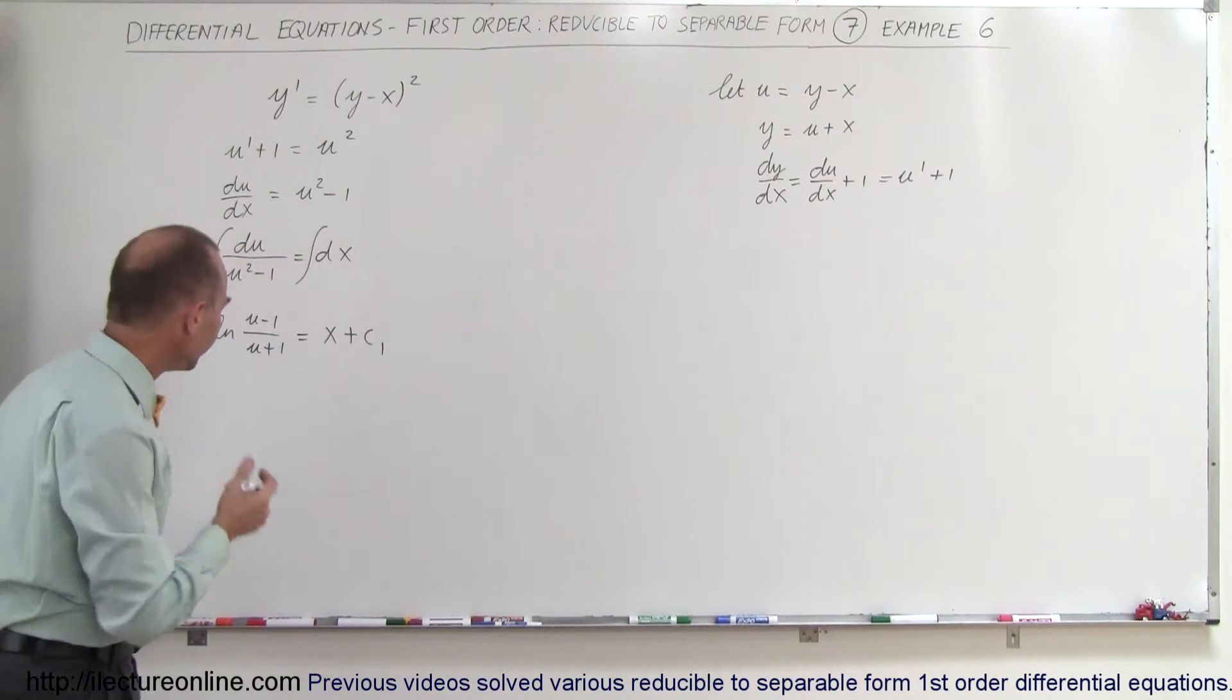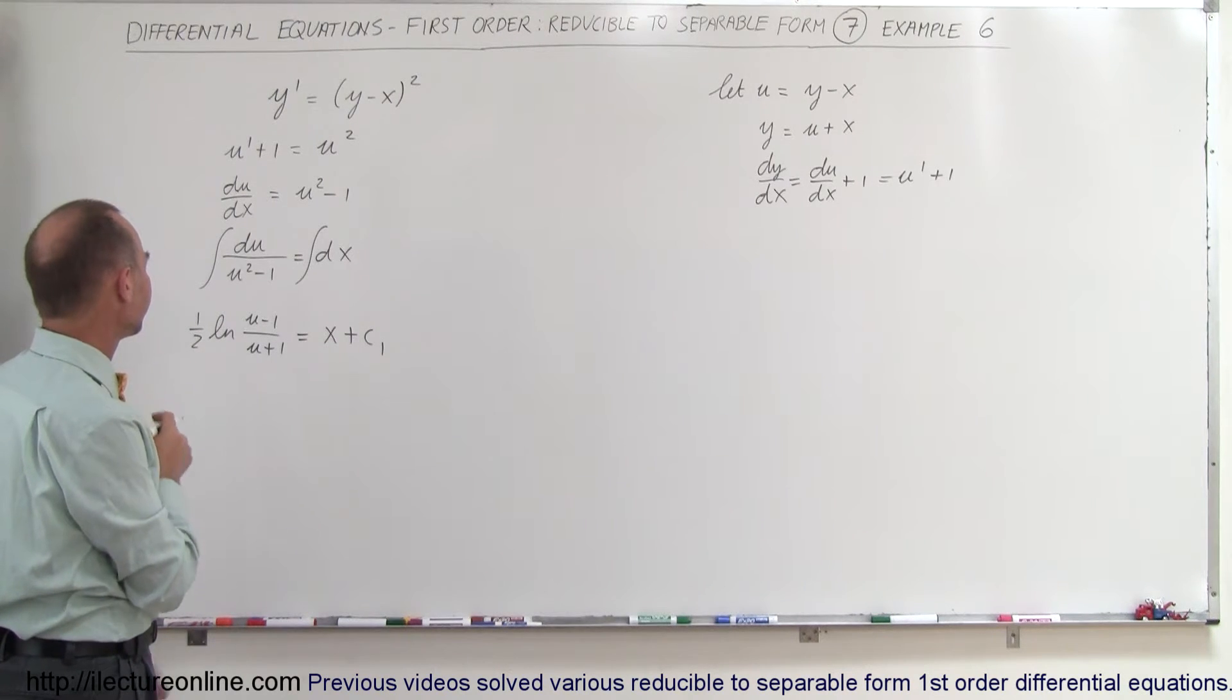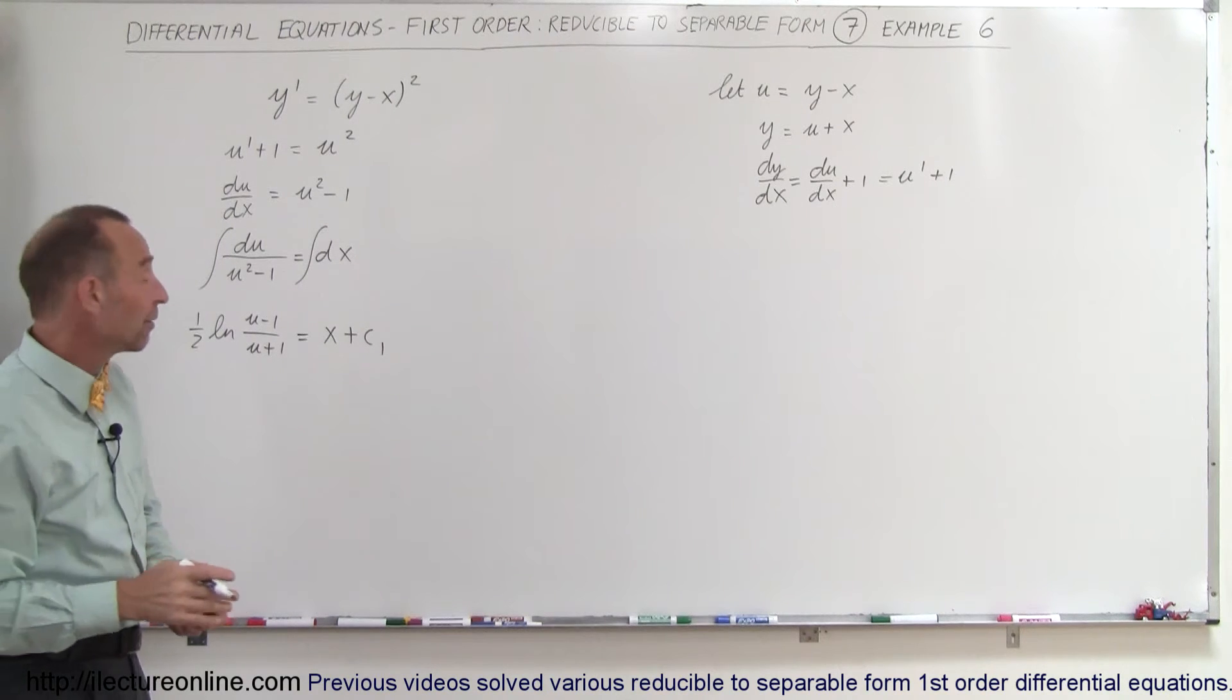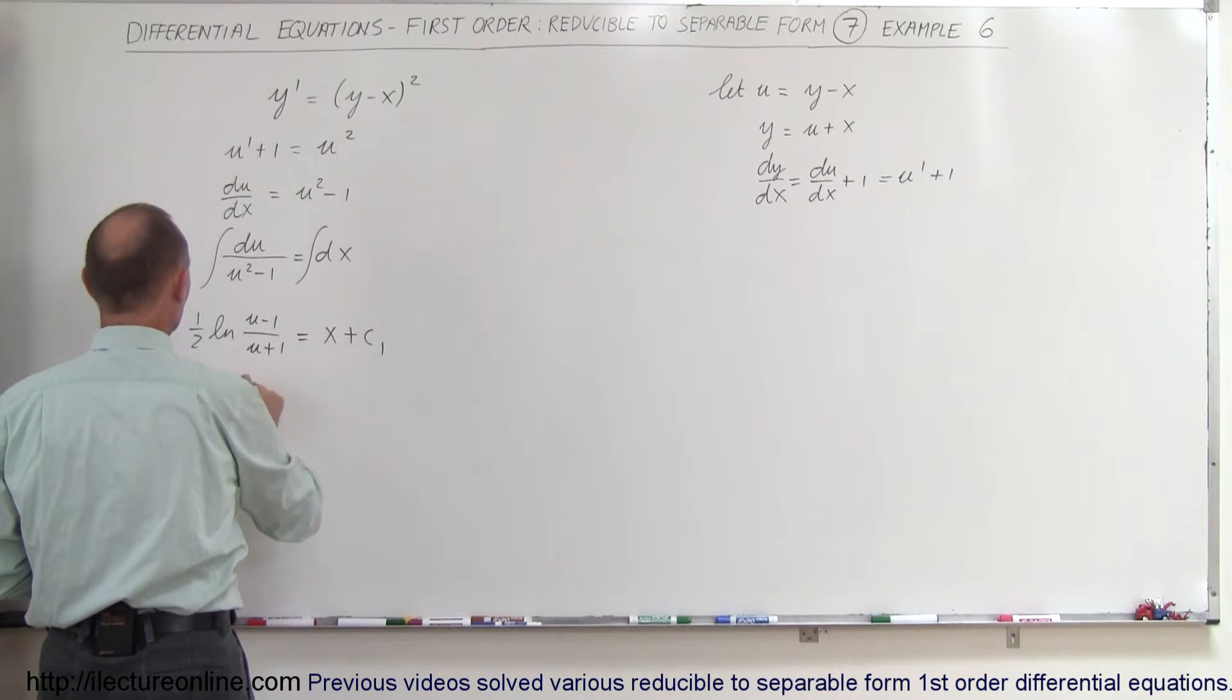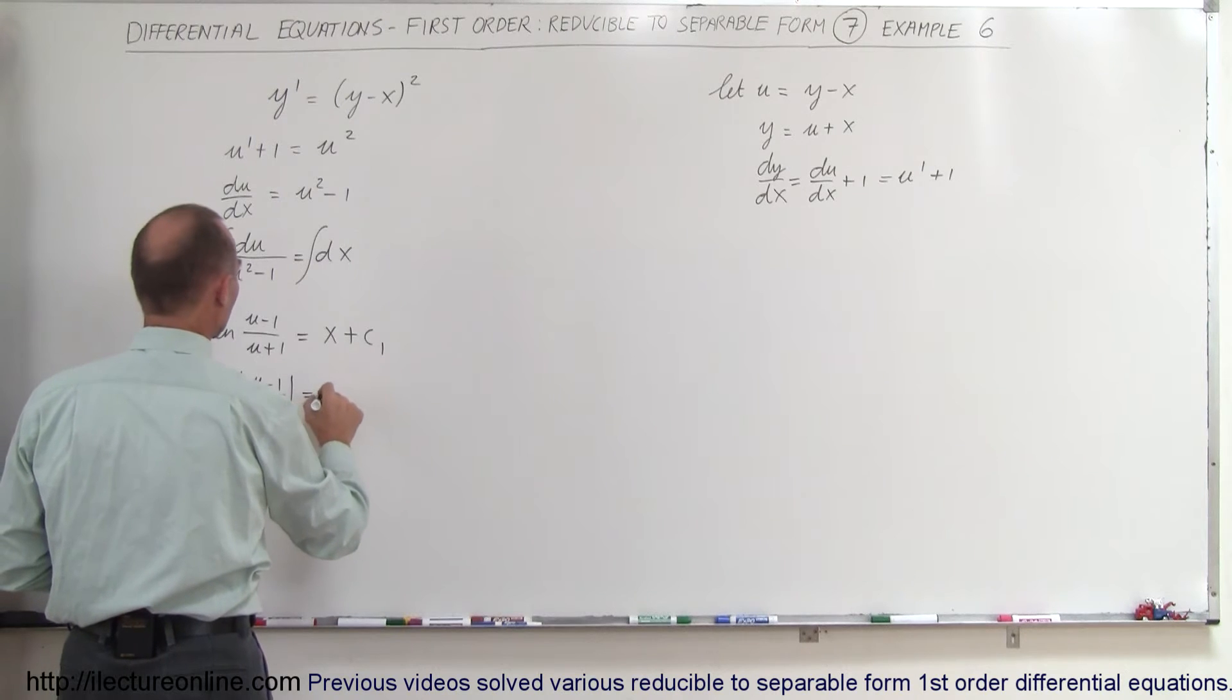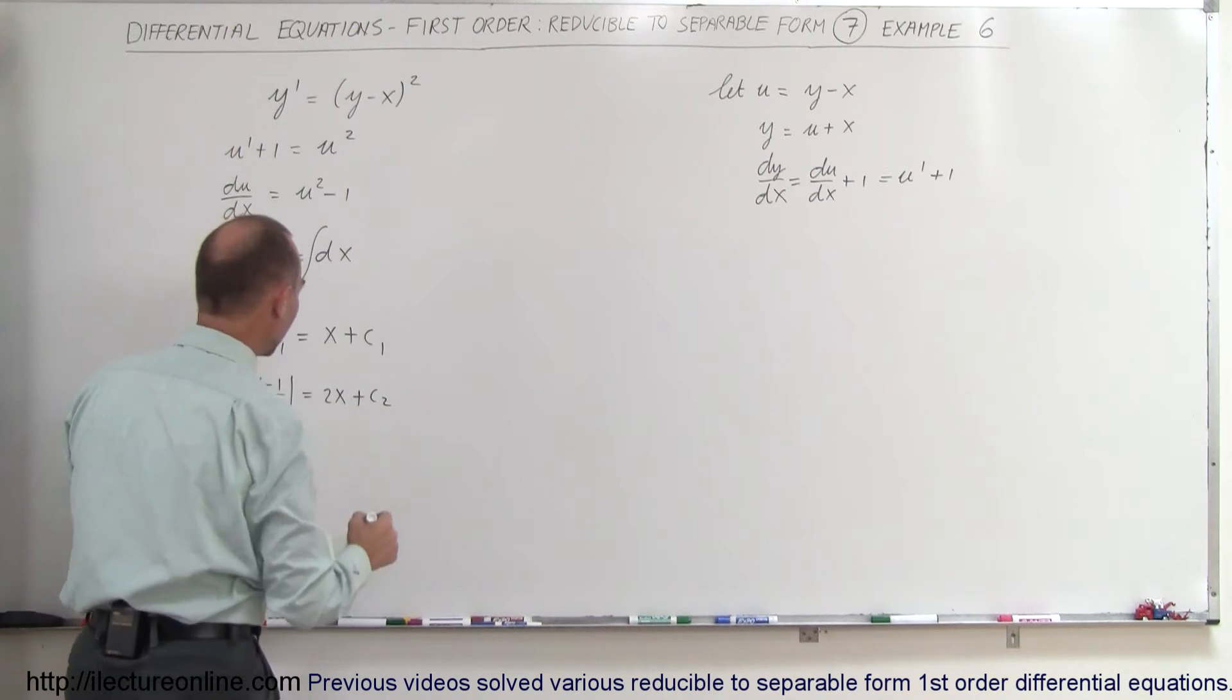How do we simplify that? Let's multiply both sides by 2, which means we get the natural log of (u minus 1) divided by (u plus 1) equals 2x plus c2.